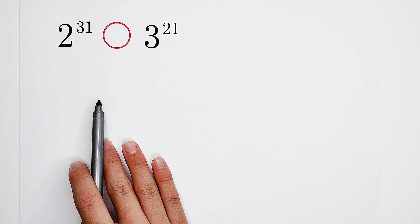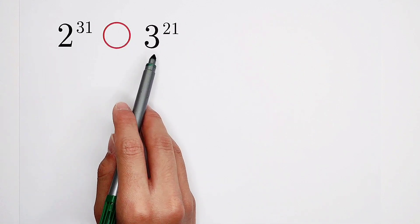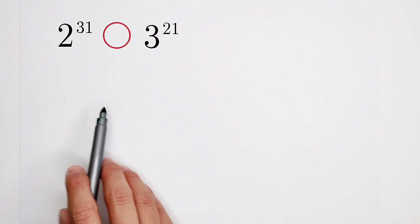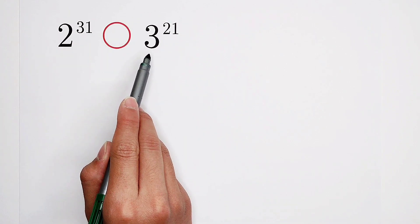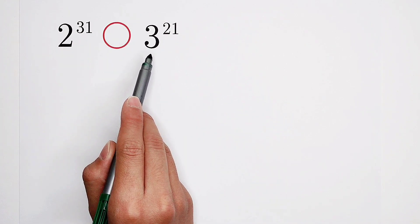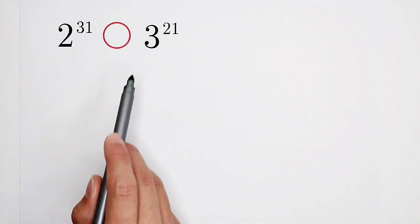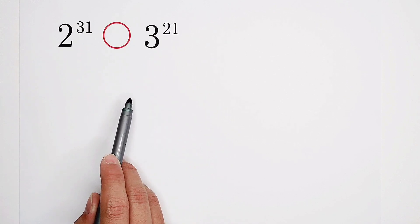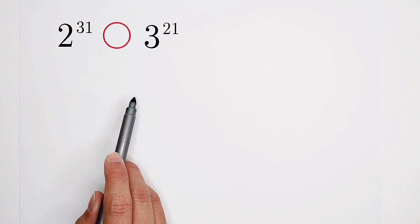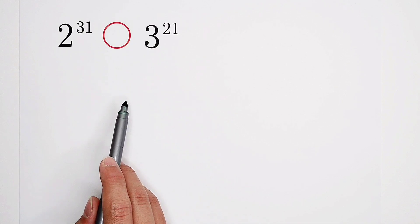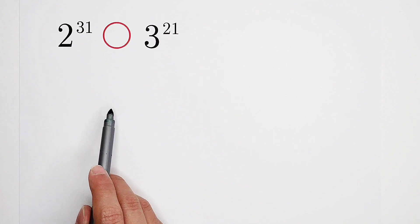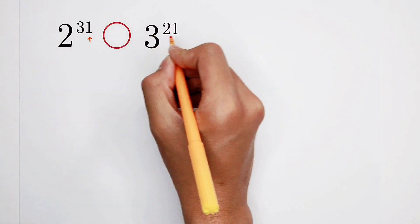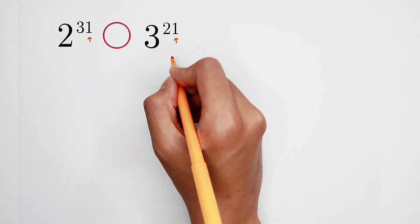Our first step is always inspection. By inspection, the bases are different, and the exponents also have different values. So what should we do? Of course, there is a little secret that you should notice.